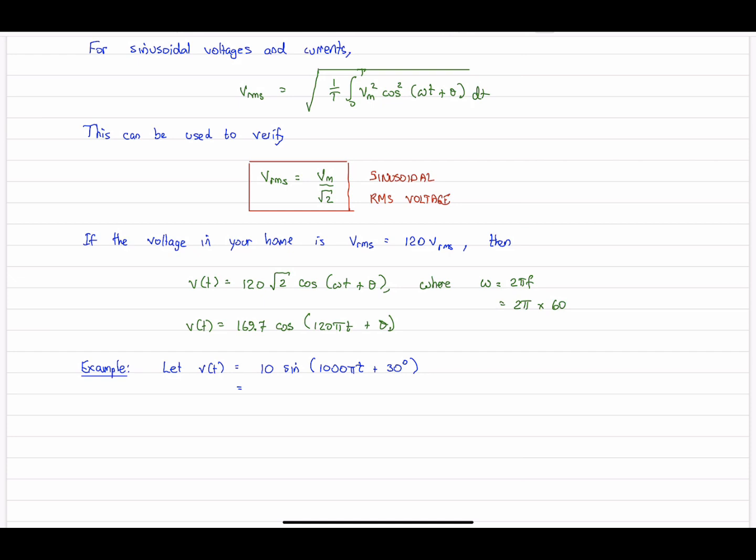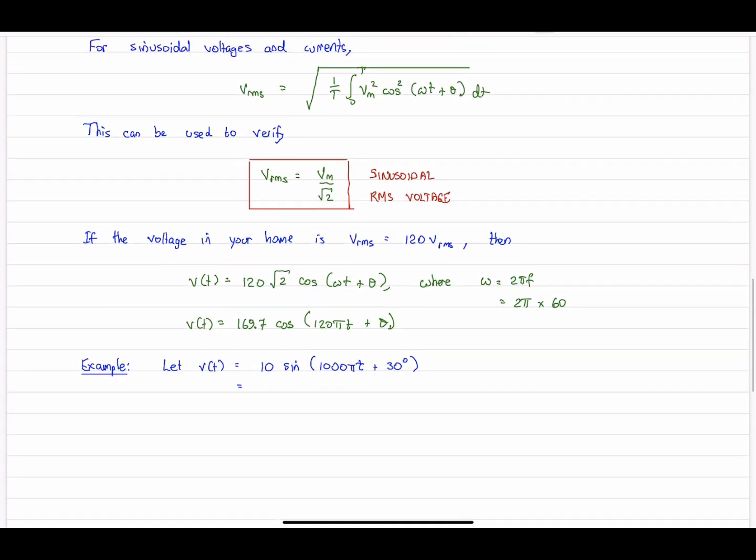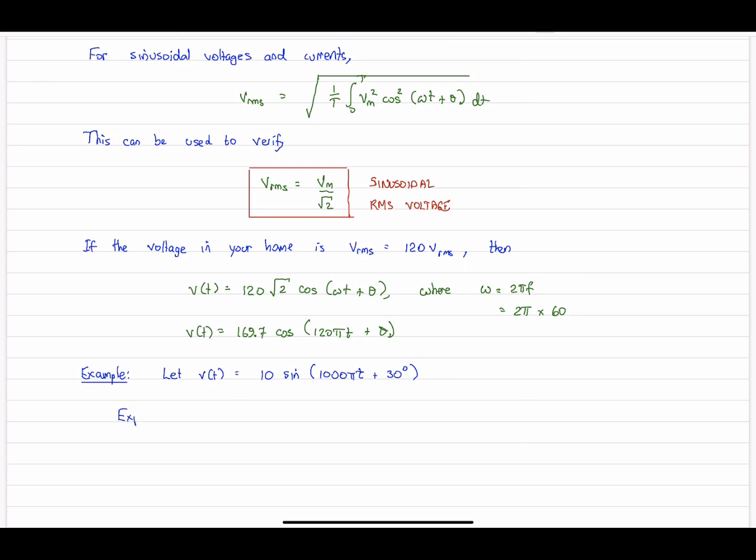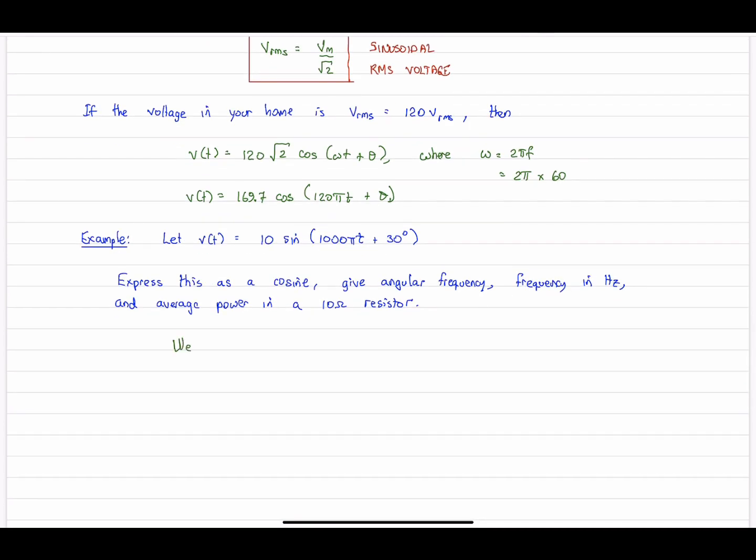So let's do a further example. Sort of to put it all together now. So let's say we have a voltage, 10 times the sine of 1000πt + 30 degrees. So this is in terms of a sine. So first order of business in general, as we'll see coming up very soon, is we're going to need to convert that to a cosine. And so that's what we'll do here. And let's identify the other key parameters here. So let's give angular frequency in radians per second, frequency in hertz, and the average power dissipated in a 10 ohm resistor.